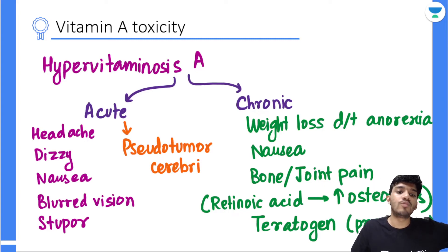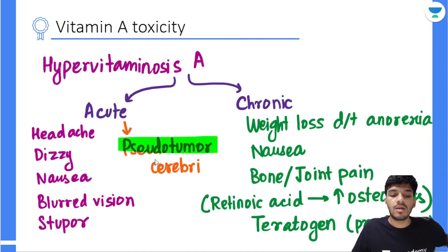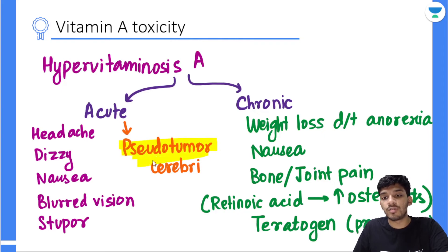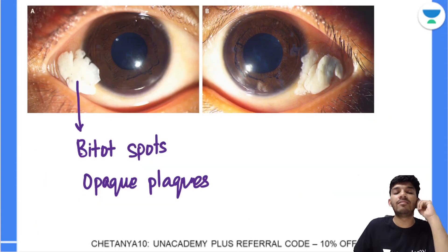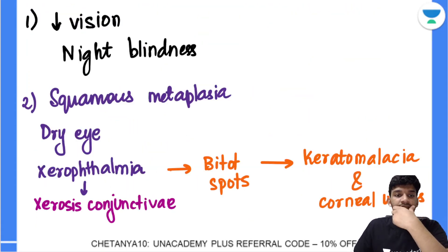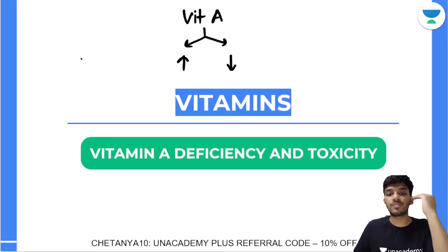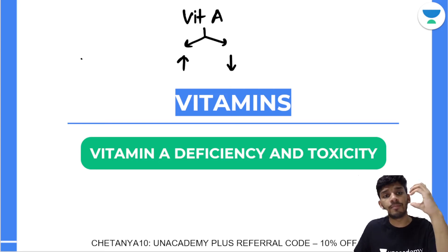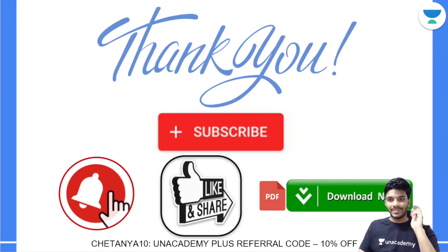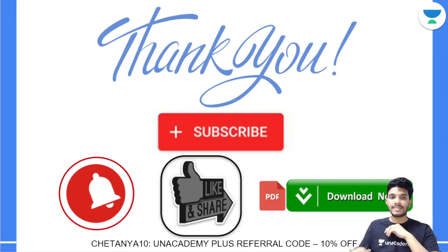That covers Vitamin A deficiency and Vitamin A toxicity. Remember: pseudotumor cerebri is the term for acute hypervitaminosis A, because the symptoms resemble a brain tumor. Thank you for watching this video. If you haven't watched the previous video, you can also watch the video on Vitamin A covering its functions and basic concepts.